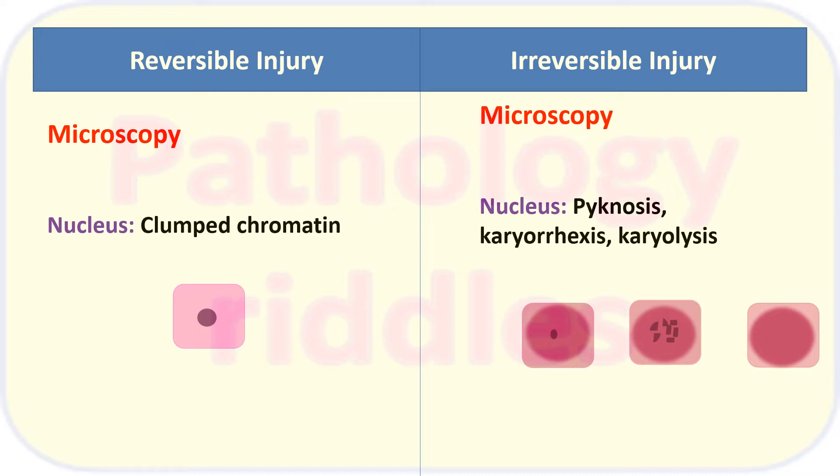In karyolysis, the nucleus is almost dissolved so you can't even make out the nucleus.